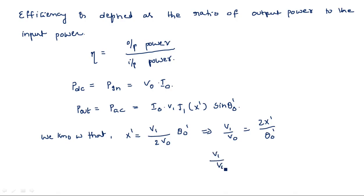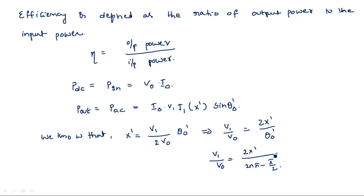We can write θ0' as 2nπ − π/2, because the phase goes through 2nπ − π/2 cycles at this particular dimension.